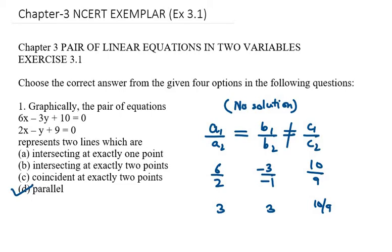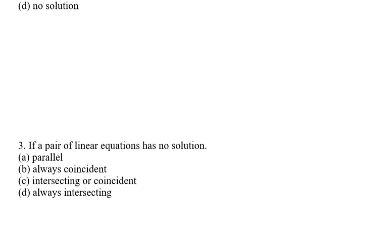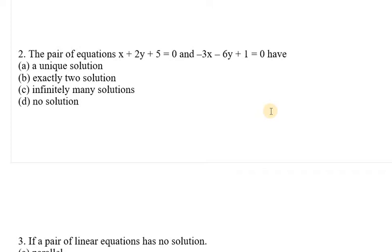Moving on to question number two: the pair of equations x + 2y + 5 = 0 and −3x − 6y + 1 = 0. Again, we find all three ratios. a1/a2 = 1/−3, b1/b2 = 2/−6, and c1/c2 = 5/1.